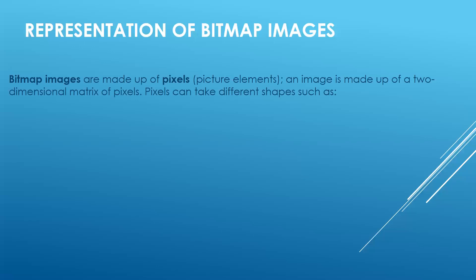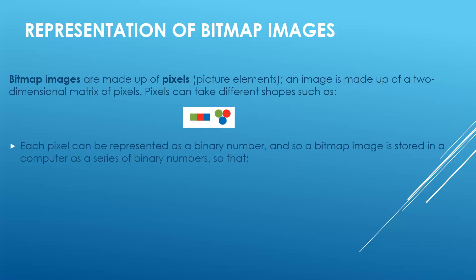The very first thing we need to know is how a bitmap image is represented. Bitmap images are made up of pixels — pixels are short for 'picture elements.' Any image is made up of a 2D matrix of pixels. Pixels can take different shapes: they can be represented in a horizontal form or as circles. Both are possible in bitmaps.